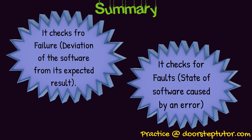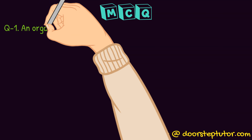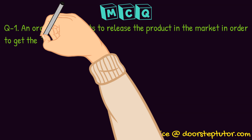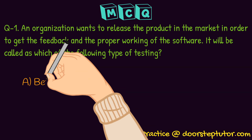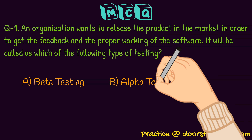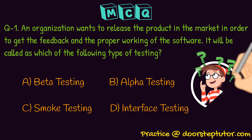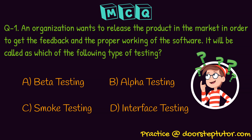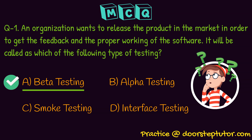Now let's discuss some important MCQs related to this topic. Question: an organization wants to release the product in the market to get feedback and check proper working of the software — what type of testing is this? The correct answer is option one: beta testing, because beta testing means releasing the entire product to real users in the real world.